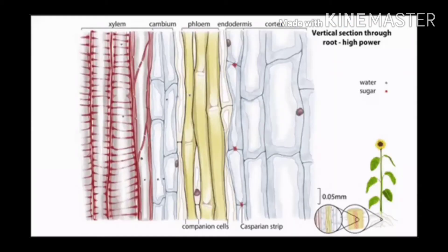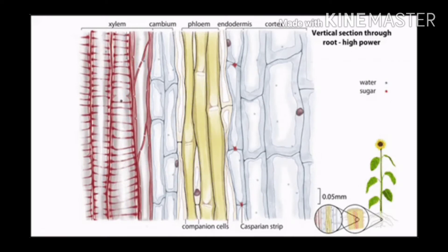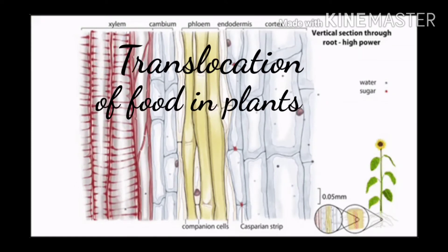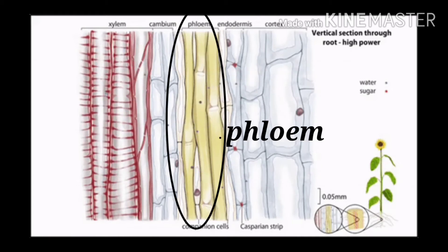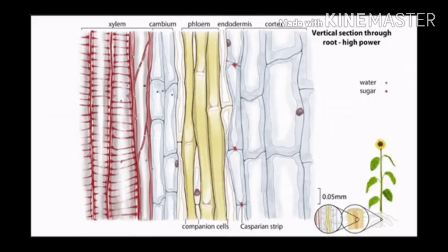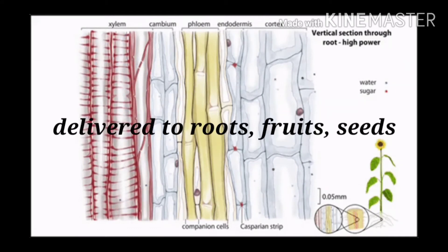Now let us consider how the products of metabolic processes, particularly photosynthesis, are moved from leaves to other parts of the plant. This transport of soluble products of photosynthesis is called translocation, and it occurs in the phloem. The phloem also transports amino acids and other substances, which are specially delivered to the storage organs of roots, fruits and seeds, and to growing organs.